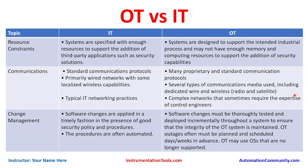OT networks are complex and sometimes require the expertise of control engineers. You'll find star topology in some parts of the plant, ring topology in others, and even mesh topology. For example, Foxboro DCS uses a mesh network at the field level — Level 1 — for high availability, and a star topology above that. Multi-topology arrangements change based on availability and redundancy requirements.